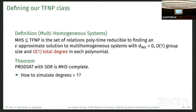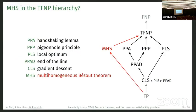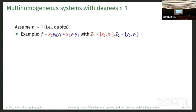What we show is that ProdSAT with SDR is MHS complete. The only part missing, because if the degrees are zero or one, we already have ProdSAT, is how do we get the degree greater than one. We can now put it into the MHS hierarchy, but unfortunately we don't know the relationships from MHS to the other classes here, and it would be super interesting to find more about it.